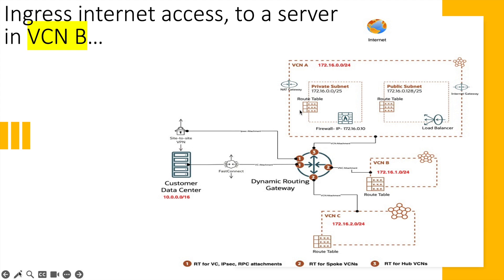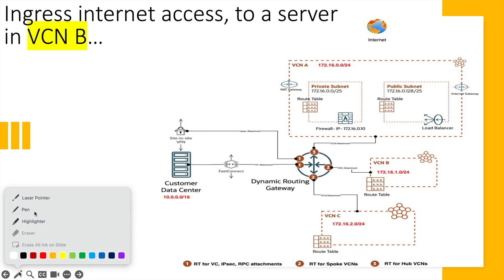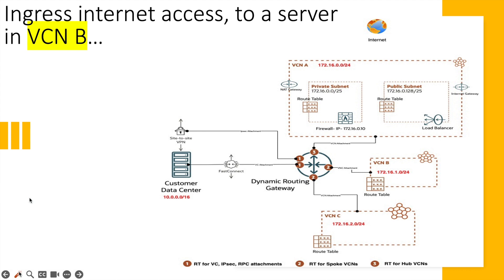Hello all, welcome back to my channel. In today's video we will be going through this hub and spoke architecture where the OCI firewall is deployed in the hub. VCN-B and VCN-C will be considered the spokes that contain the spoke workloads, and the customer data center connecting to OCI over FastConnect or even IPSec will be considered another spoke.